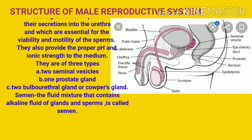The third part of the male reproductive system is the accessory glands. Those glands which pour their secretion into the urethra and which are essential for the viability and motility of the sperms are called accessory glands. They also provide proper pH and ionic strength to the medium. They are of three types: two seminal vesicles, one prostate gland, and two bulbo-urethral glands or Cowper's glands.